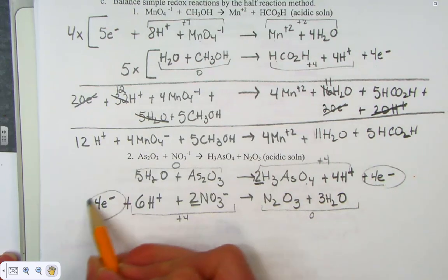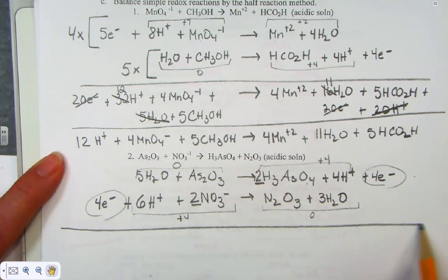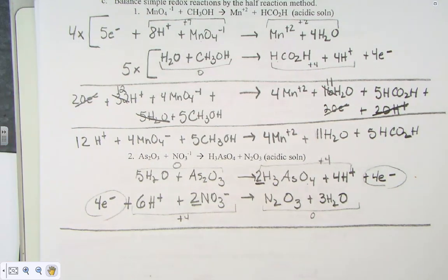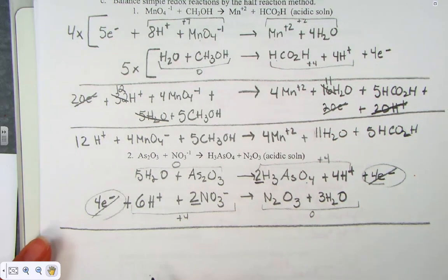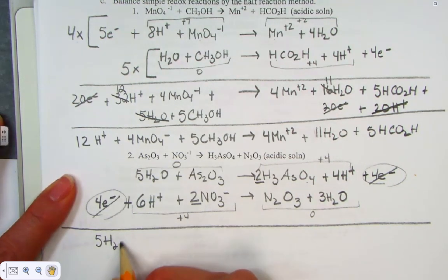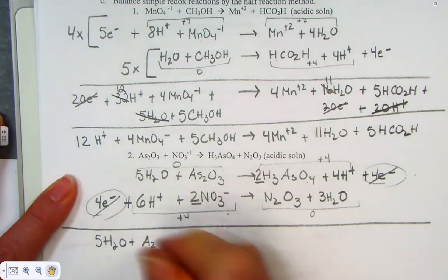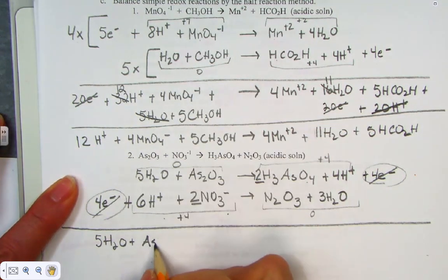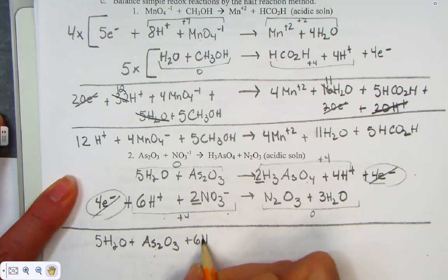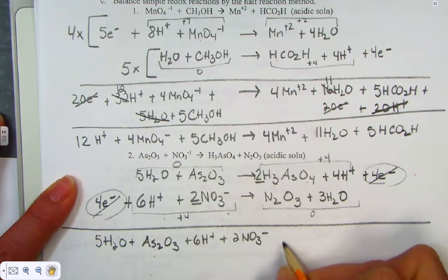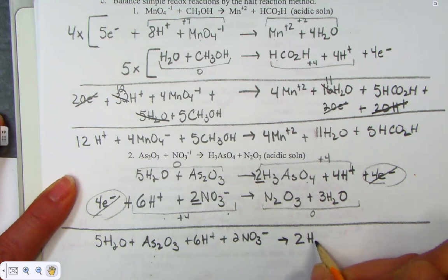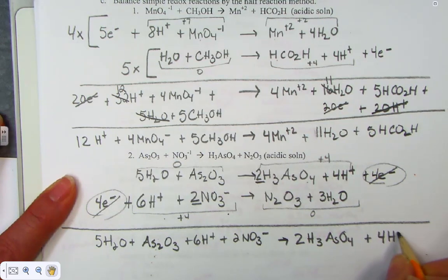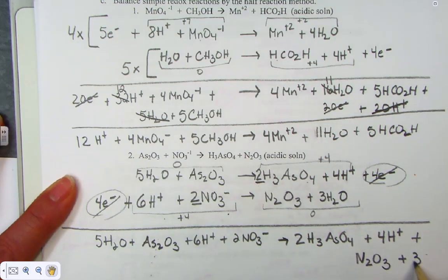Notice the electrons lost equal the electrons gained, so we do not need to distribute a coefficient as we did in the previous example. We add them back together and simplify. The 4 electrons simply cancel. On the left I have 5 waters, AS₂O₃, 6 protons, and 2 nitrates; forming 2 H₃AsO₄, 4 protons, molecular dinitrogen trioxide N₂O₃, and 3 waters.